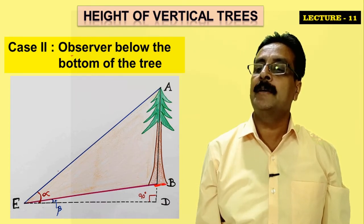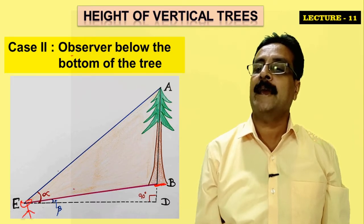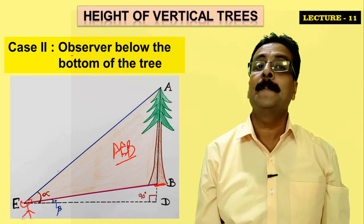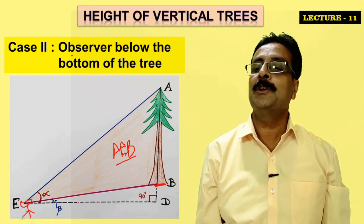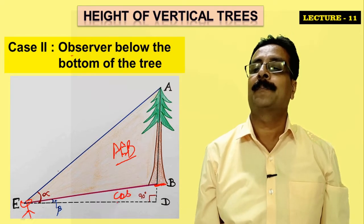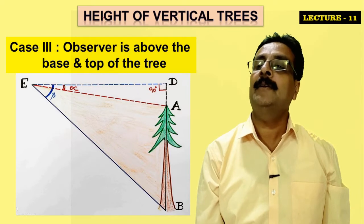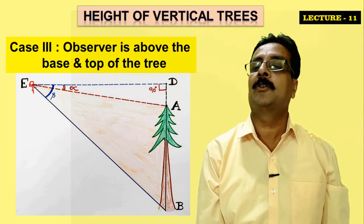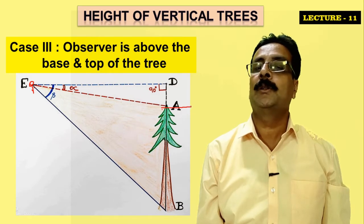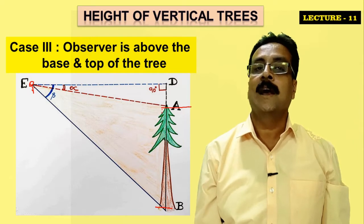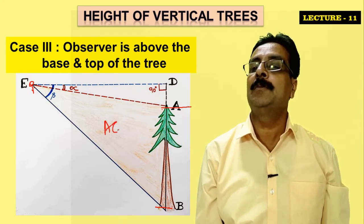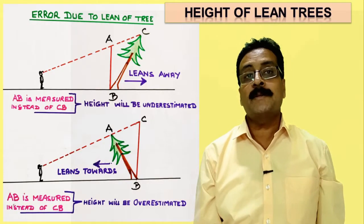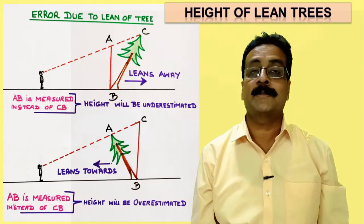Case 2 is where the observer is below the bottom of the tree — the tree is higher up. Here, segments A-E-B are measured using the tangent method. If E-D cannot be measured because you cannot dig into the ground, cosine is applied. Case 3 is where the observer is above both the base and top of the tree, so both base and top are lower than the observer. Again, tangent is applied for A-E-B, and cosine if horizontal distance is not directly measurable.